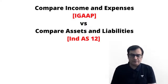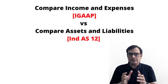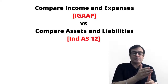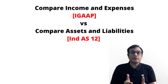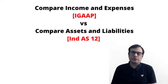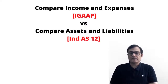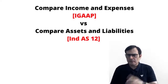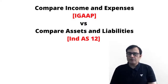IND AS 12 is not based on an income statement approach — it uses the balance sheet approach. Instead of comparing incomes and expenses, we compare the value of assets as per the books of accounts versus tax, and we compare the value of liabilities as per the books of accounts versus tax. That is the reason steps one and two require you to compare the carrying amount of the asset and liability versus the tax base of the asset and liability. The question is: are the two approaches going to give you different answers or the same answers?